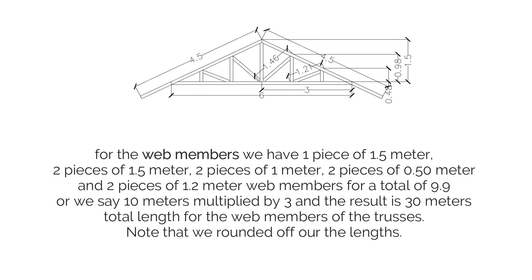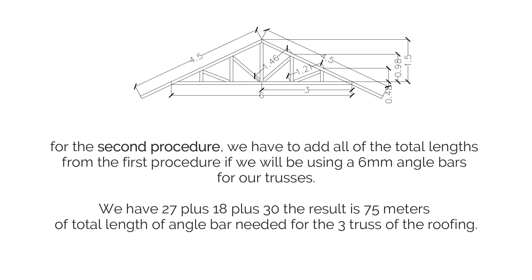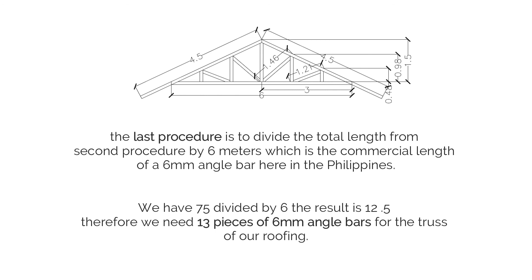Note that we rounded off our lengths. Second procedure: add all total lengths together. Using 6 mm angle bars, we have 27 plus 18 plus 30 equals 75 meters of total angle bar needed for the 3 trusses. Last procedure: divide 75 by 6 meters, the commercial length of a 6 mm angle bar in the Philippines. The result is 12.5, therefore we need 13 pieces of 6 mm angle bars for the truss of our roofing.